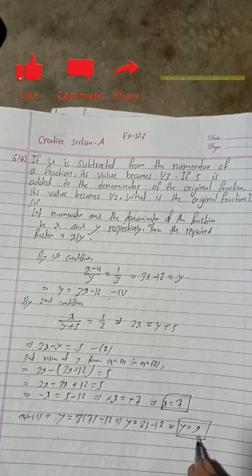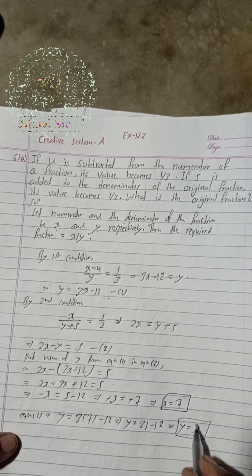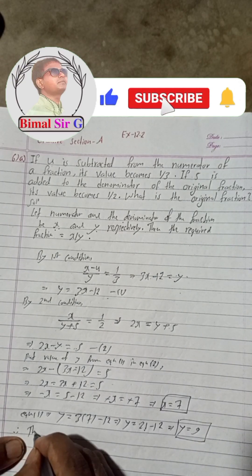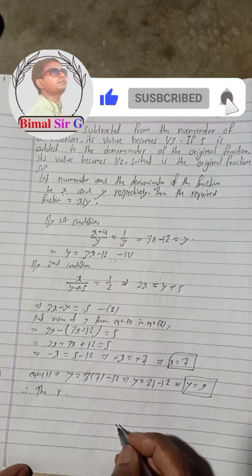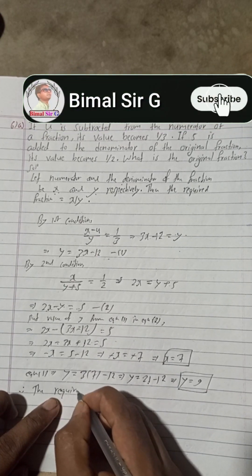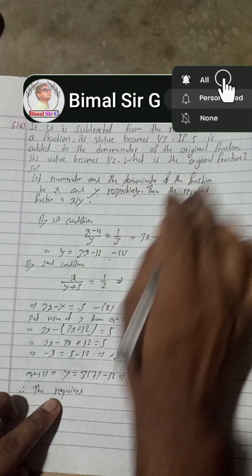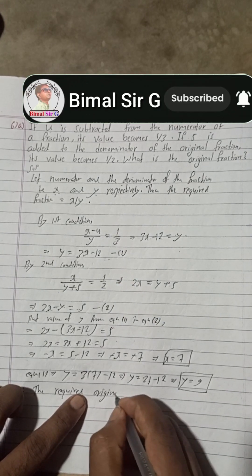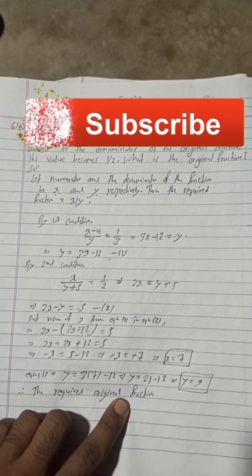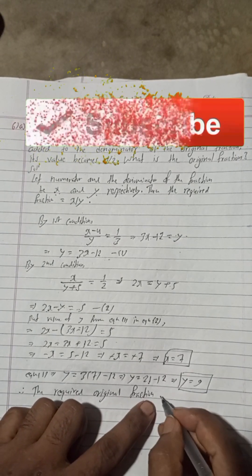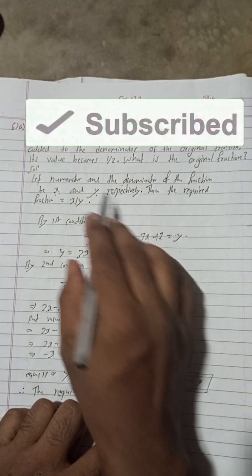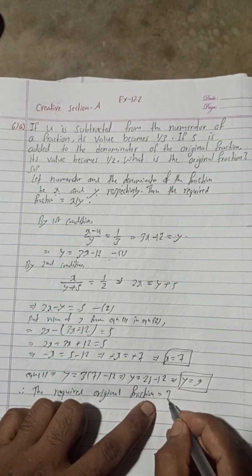We got x = 7 and y = 9. Therefore the required original fraction is x/y = 7/9.